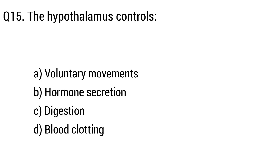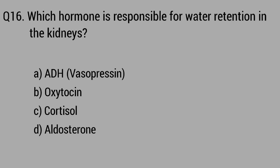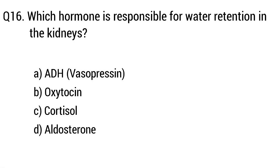Question 15. The hypothalamus controls. Option A: Voluntary movement. B: Hormone secretion. C: Digestion. D: Blood clotting. The right answer is Option B: Hormone secretion. Question 16. Which hormone is responsible for water retention in the kidney? The right answer is Option A: Vasopressin.